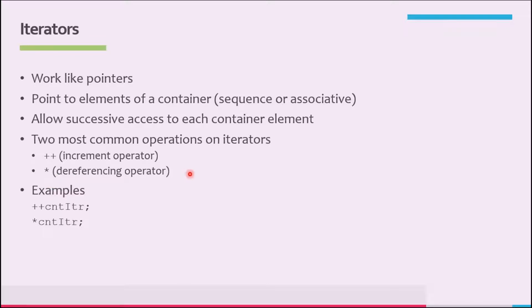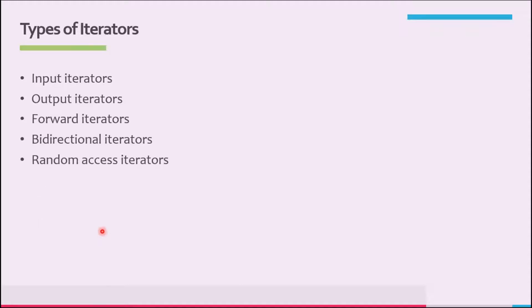The two most common operations on iterators are the plus-plus increment operator and the asterisk dereferencing operator. Suppose cntItr is an iterator into a container. The expression ++cntItr advances cntItr so that it points to the next element in the container. The expression *cntItr returns the value of the element of the container pointed to by cntItr.